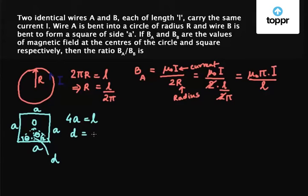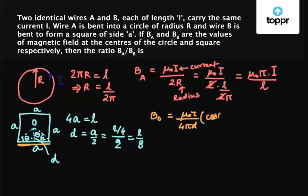So we have D equals A by 2 which equals L by 4 by 2, equals L by 8. Now the magnetic field due to this wire, that is this side on O, is B₀. So B₀ equals μ₀I upon 4πD into cos θ₁ plus cos θ₂.